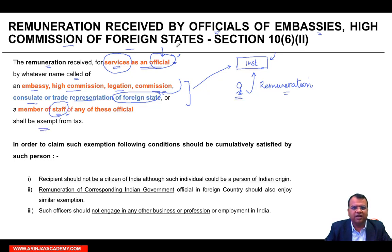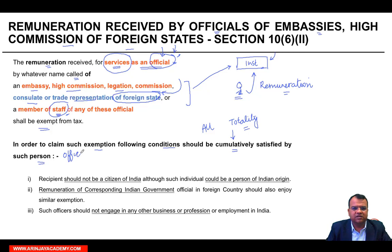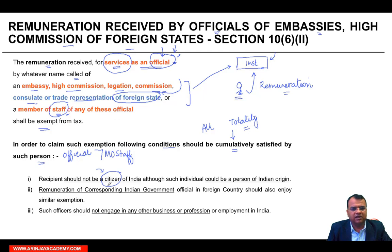लेकिन ऐसा नहीं है कि हर एक official का remuneration exempt है. In order to claim such exemption, following conditions should be cumulatively — मतलब in totality, all of them — satisfied by such person. Such person means either the official or a person who is a member of staff of the official. The recipient should not be a citizen of India. अगर आप Indian citizen हैं तो यह exemption आपको नहीं मिलेगी. You should not be a citizen of India.